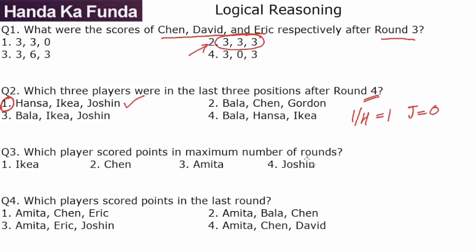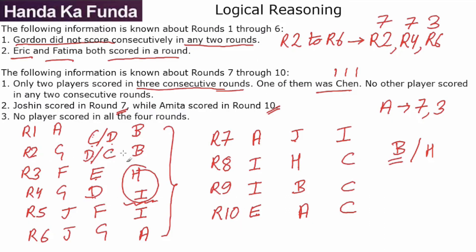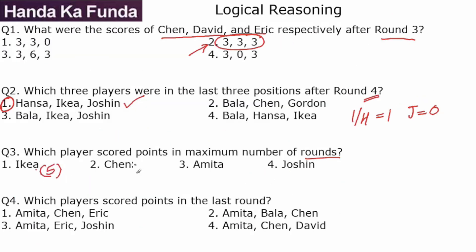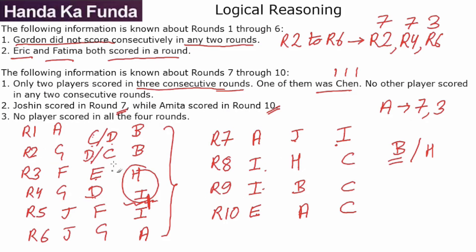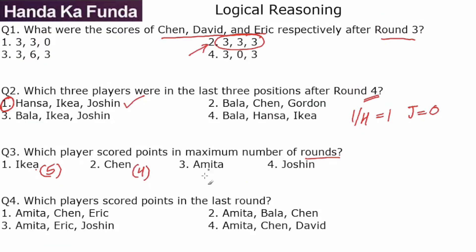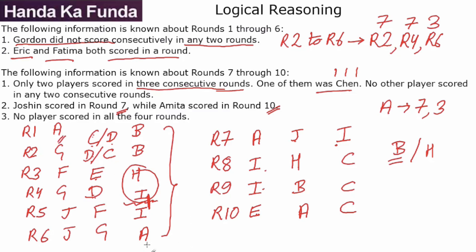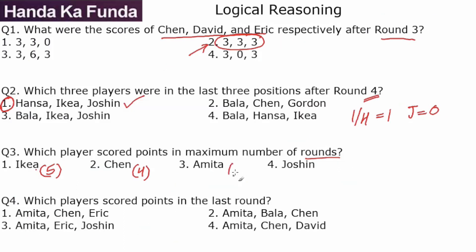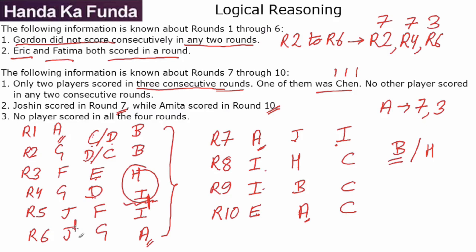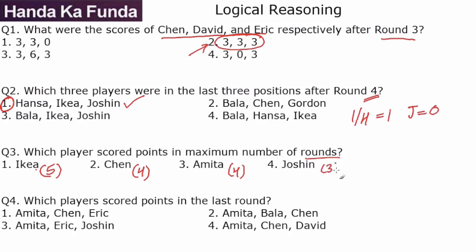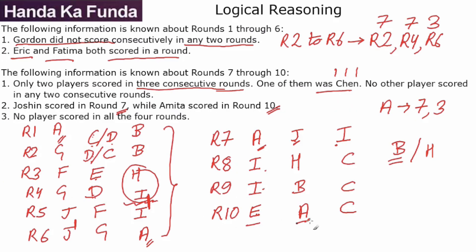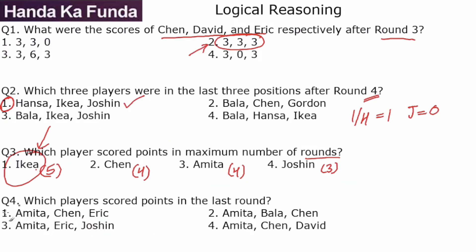Question 3: Which player scored points in the maximum number of rounds? Ikea scored twice in the first six rounds and three times in rounds 7 to 10, for a total of five times. Chen scored four times, Amita scored four times, and Joshin scored three times. Ikea scored the most — five times. Question 4: Which players scored points in the last round? E, A and C scored in round 10 — option 1 is the answer.